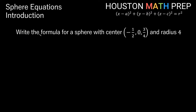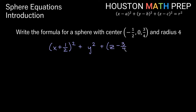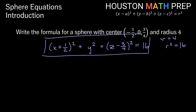Working the other direction: write the formula for a sphere with center at (negative 1/2, 0, 3/4) and radius 4. We plug into the formula, changing signs as we go in. x minus negative 1/2 becomes x plus 1/2, squared. y minus 0 is just y squared. z minus 3/4 stays as z minus 3/4, squared. The radius is 4, so r squared equals 16. Our equation is: quantity x plus 1/2 squared, plus y squared, plus quantity z minus 3/4 squared, equals 16.